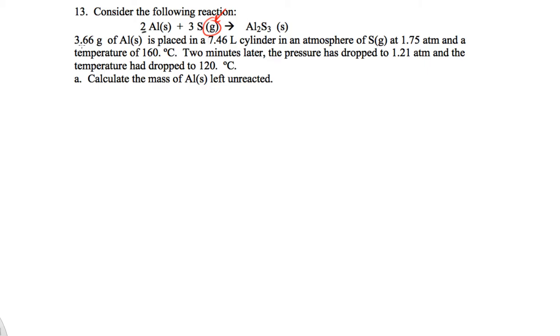We have a certain mass of aluminum that's placed in a 7.46 liter cylinder in an atmosphere of sulfur gas at 1.75 atmospheres and a temperature of 160°C. Two minutes later the pressure has dropped and so has the temperature.